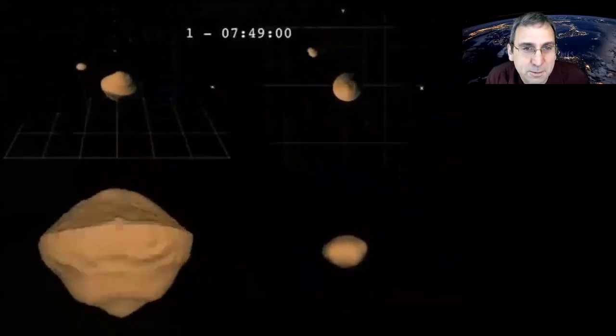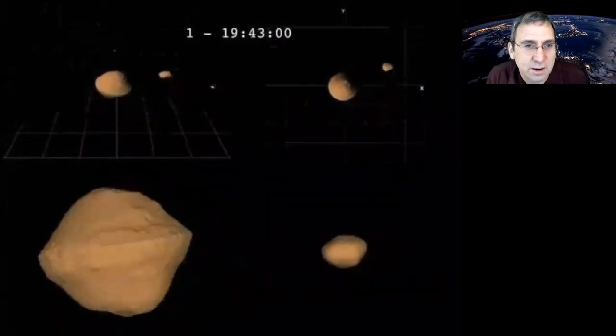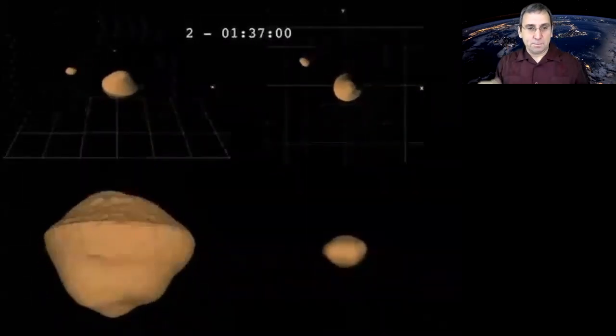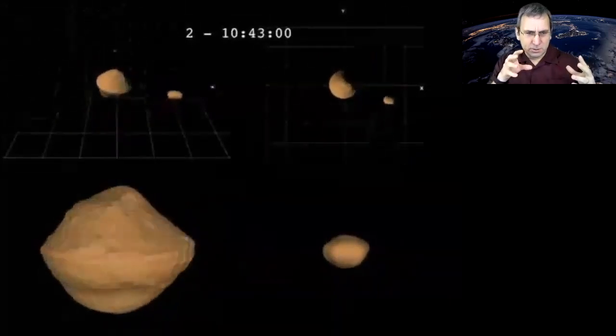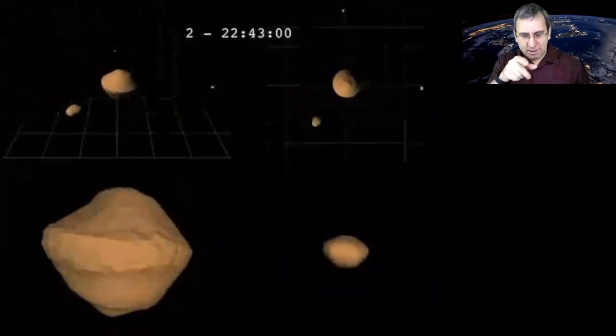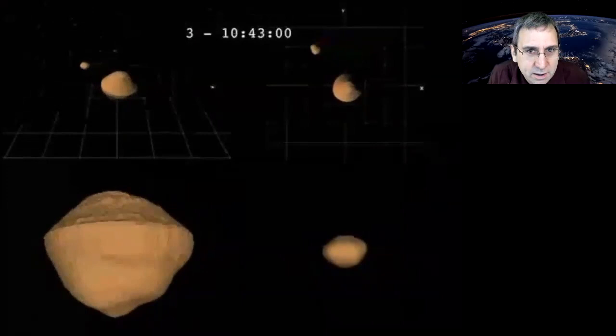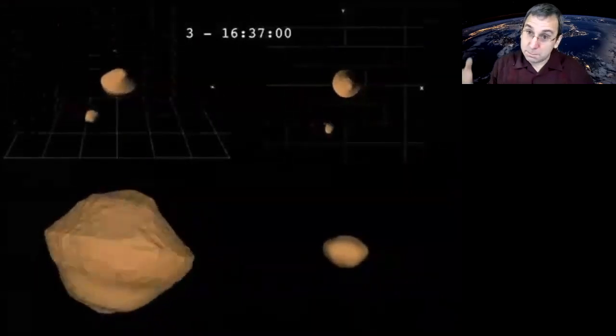And so they found out that it's a binary asteroid. So this is what the asteroid looks like. You could see a few different views up there at the top. That's the first number is days, and then it's hours and minutes. So it's a binary, meaning there's a central one that I think is a few kilometers wide. It was described as muffin shaped.